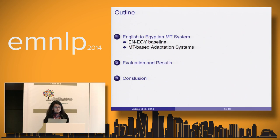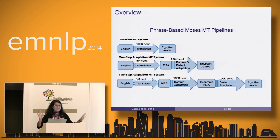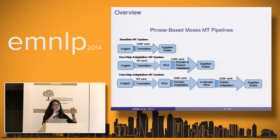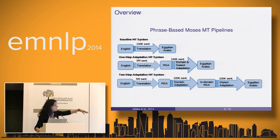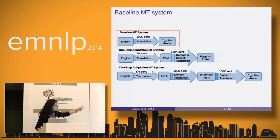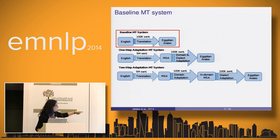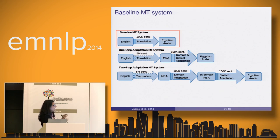Our system is mainly a phrase-based machine translation system. We have a baseline that translates English sentences into Egyptian Arabic using our in-domain corpus directly. Then we designed two different approaches: the first is a one-step adaptation system, where the core system translates English into MSA and then another system adapts domain and dialect simultaneously to translate into Egyptian.